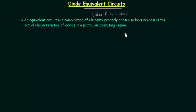So in an equivalent circuit we choose elements like resistor, capacitor, inductor to best represent the actual characteristics of the device — like a diode, transistor, etc. — in a particular operating region.